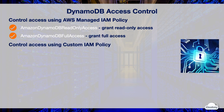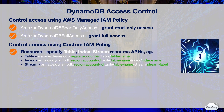AWS also allows you to use custom IAM policies for granular access controls. You can specify DynamoDB resources in the IAM policy using Amazon Resource Names, or ARNs, to control access to a specific table, index, or stream. The ARN of the table is made of the AWS namespace, region, your account ID, and the table name. The ARN of the index or stream includes an additional index name or stream label.